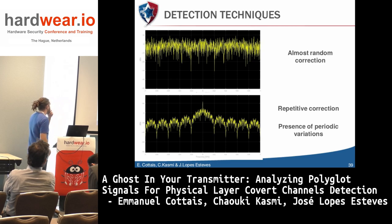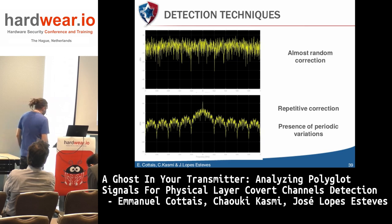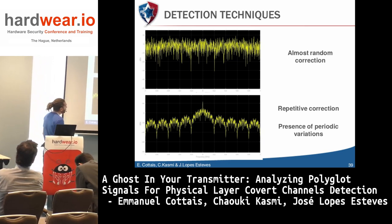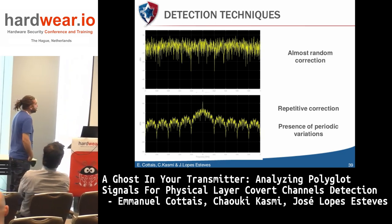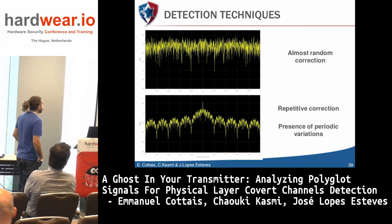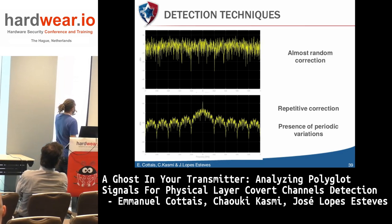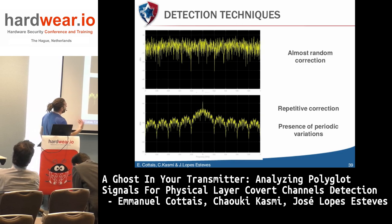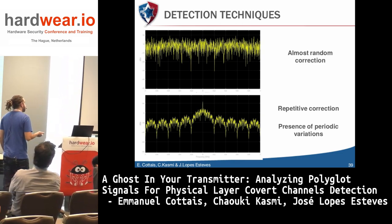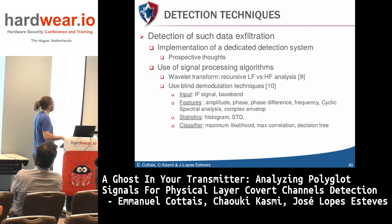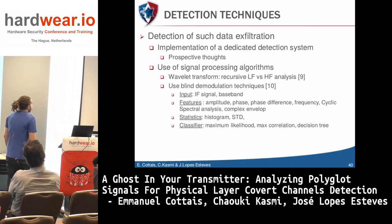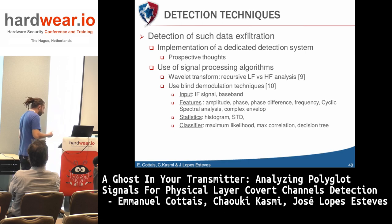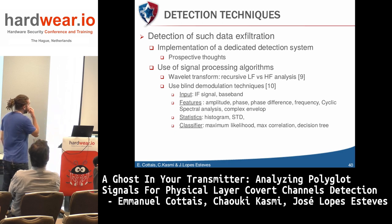That's what we tested. The top image represents the IQ imbalance correction factor when there is no covert communication, and we see that the spectrum shows the presence of periodic variations when our covert transmitter is on. We also thought other techniques could be implemented to consolidate our approach, and those are a work in progress.